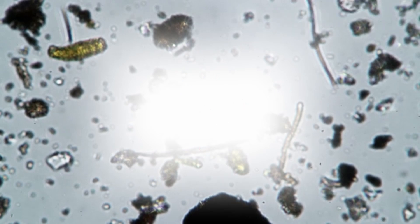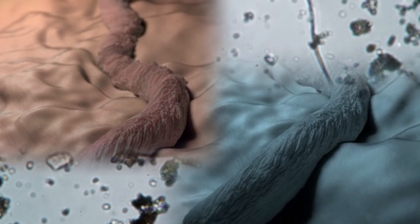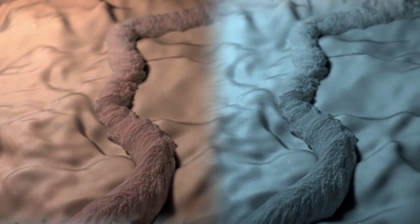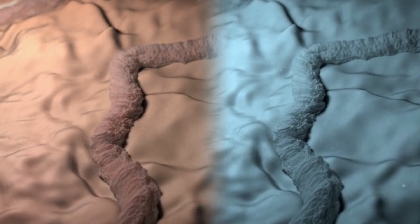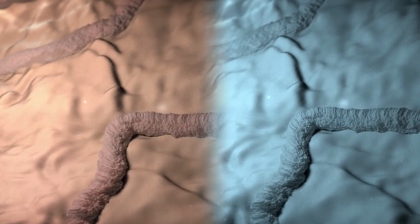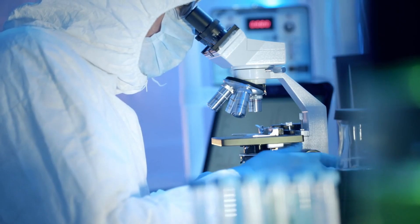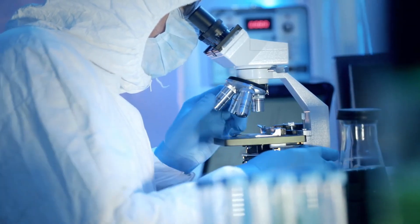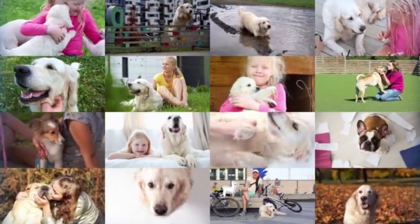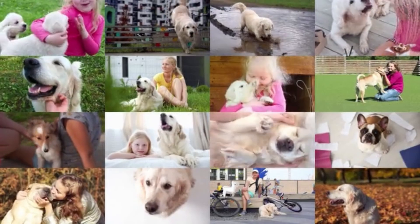Tunga penetrans, an ectoparasite causing significant morbidity in endemic communities, has recently been found to harbor endobacteria of the Wolbachia genus. As Wolbachia has been considered a potential target for interventions against insect pests and human filariasis, we collected sand fleas from infested humans, dogs, and rats in a hyperendemic area in northeastern Brazil.